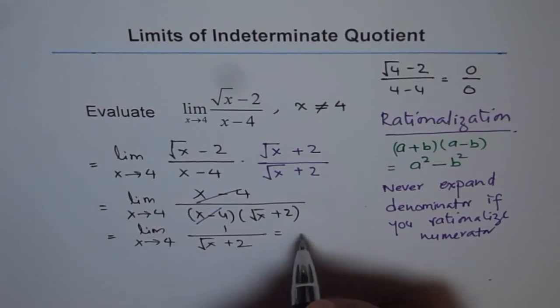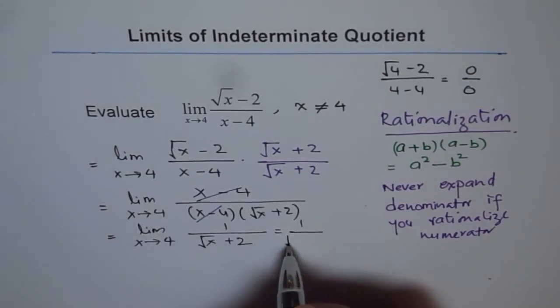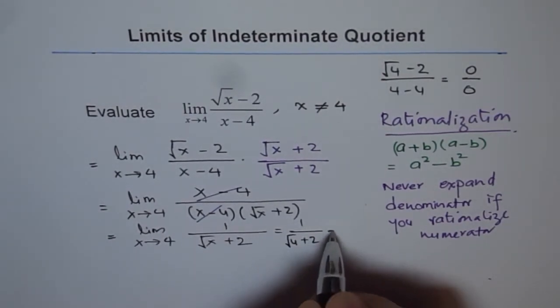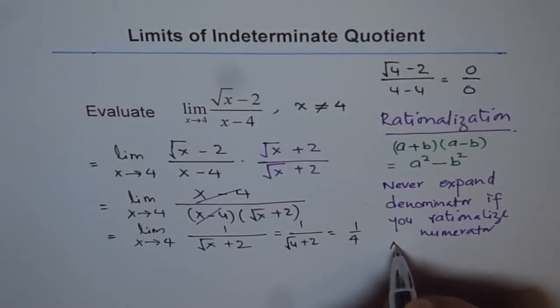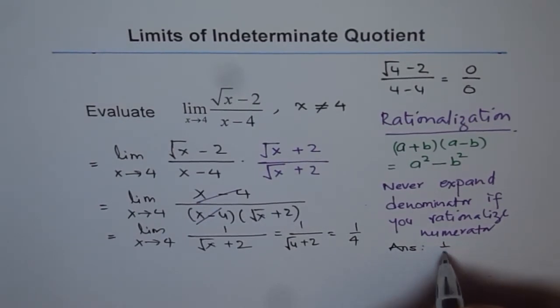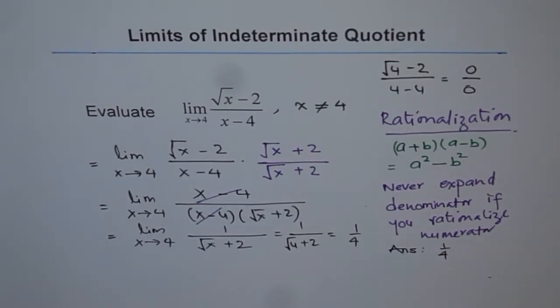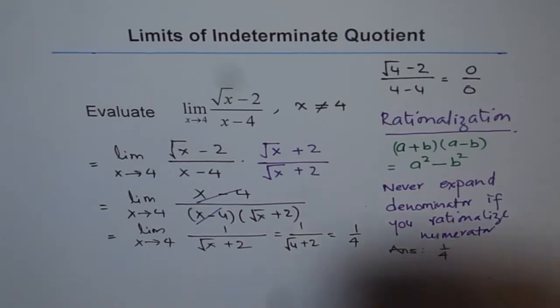Now, you can substitute 4 here. Square root of 4 is 2. So, we get 1 over, let me write, square root of 4 plus 2. So, 2 plus 2 is 4. So, 1 over 4 is our answer. So, we get our answer, and that is 1 over 4. I hope you understand and appreciate this technique.